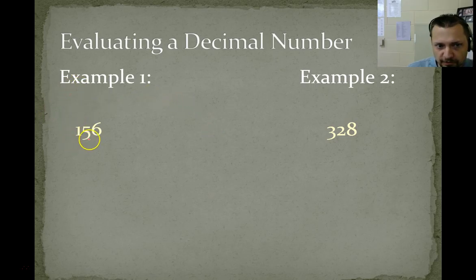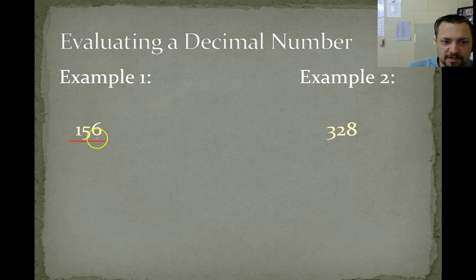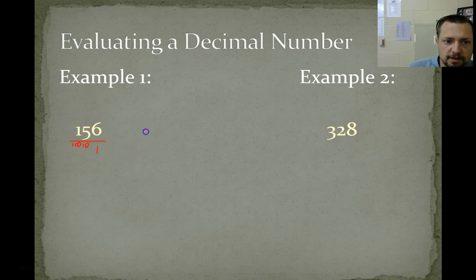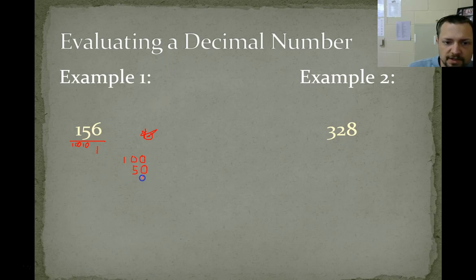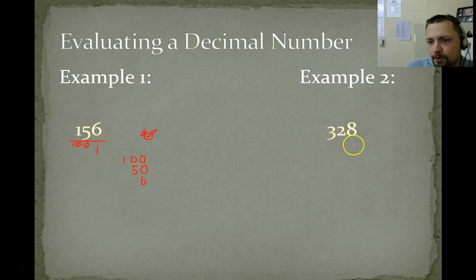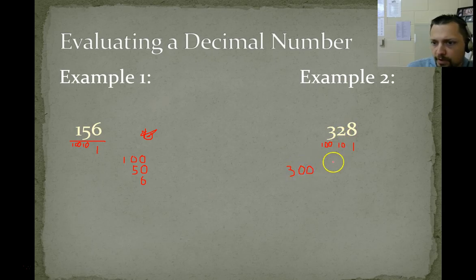So when we evaluate a number, this is 156. If we have a 6, it's in the ones place; if we have a 5, it's in the tens place; and this 1 is in the 100s place. So we can see why this is number 156 — it's 100, because we have a 1 in the 100s place, then we have 5 times 10, so 5 tens would be 50, and then we have 6 ones. Over here, we have 3 hundreds, so this is 328. The 20 comes from having 2 tens, and the 8 comes from 8 in the ones position.